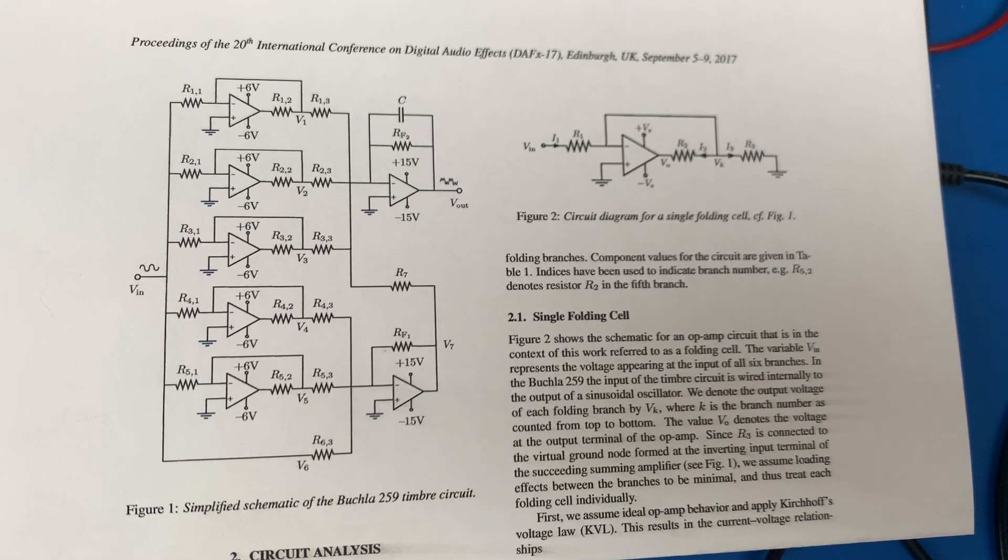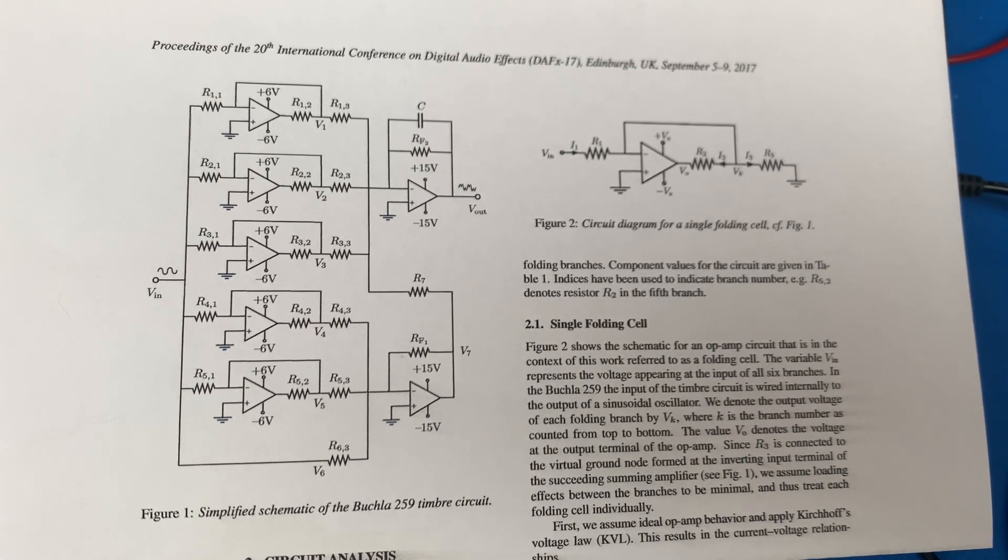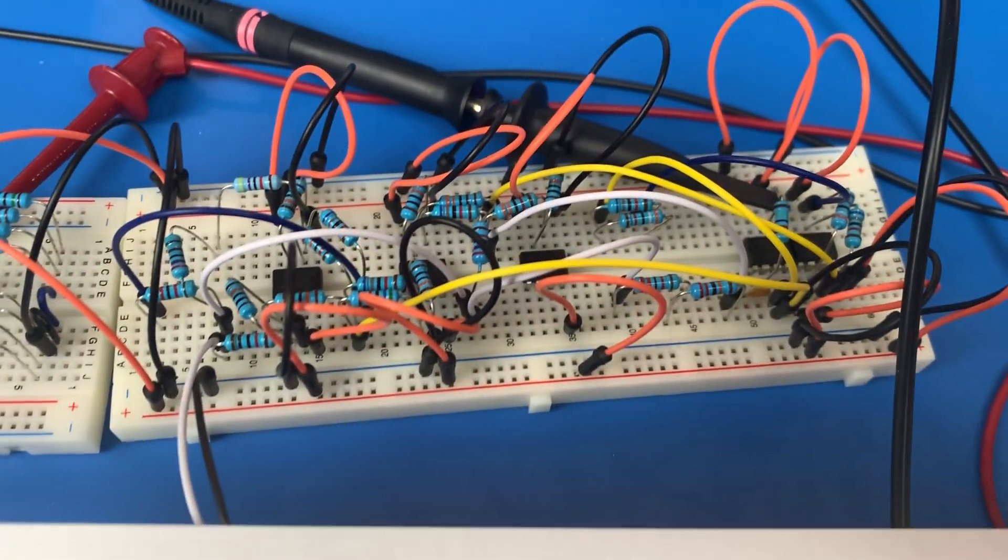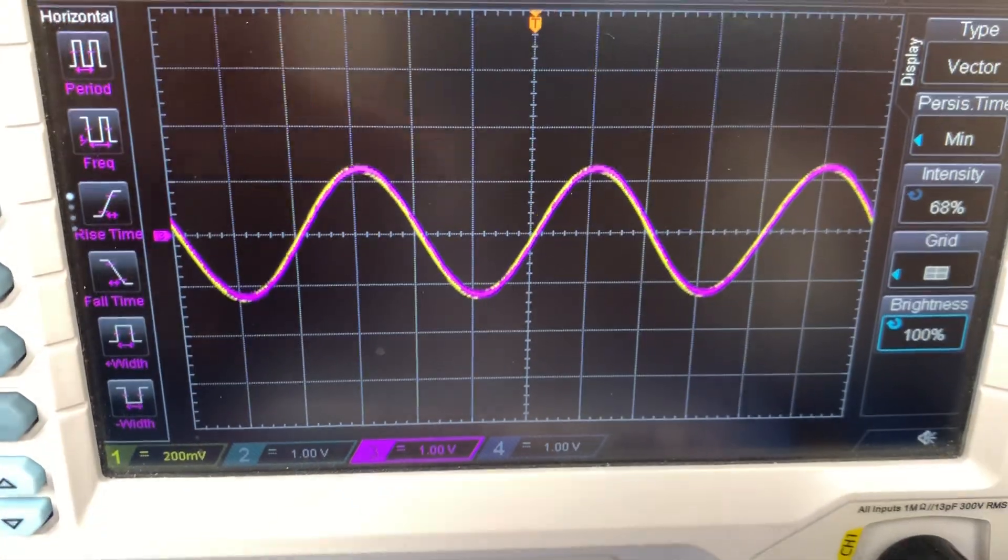This is an interesting circuit called a wave folding circuit. It's built with a bunch of op amps and resistors. Here's that same circuit shown on a breadboard, and here is the input and output of that circuit being shown on an oscilloscope.